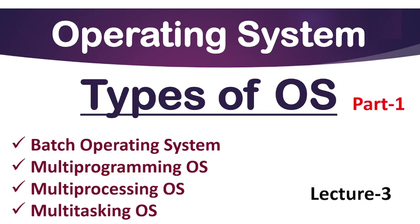Before moving to the session, you should know what is the meaning of an operating system. An OS manages all the applications and programs in a computer and it is loaded into a computer. Whenever we want to load an operating system, we load it by boot programs. It also enables applications to interact with the computer hardware. An operating system is an interface between the user and the computer hardware. Without an operating system, it is not possible for a user to interact with the computer system.